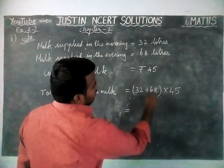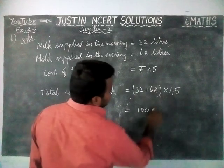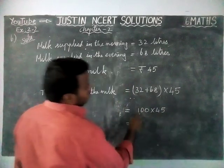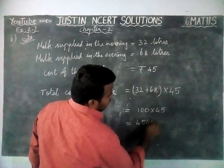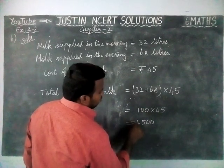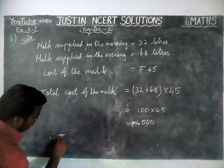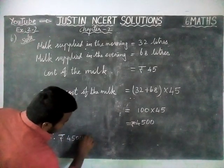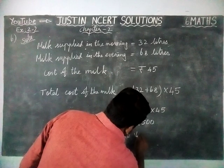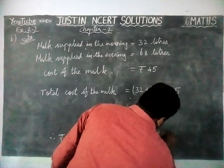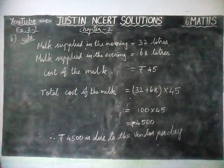When we add: 2 plus 8 is equal to 10, carry 1. 3 plus 6 is equal to 9, plus 1 is equal to 10. So 32 plus 68 equals 100. Now 100 into 45 — since this is a multiple of 10, 1 into 45 is 45, and we add 2 zeros. So the total amount is rupees 4500.